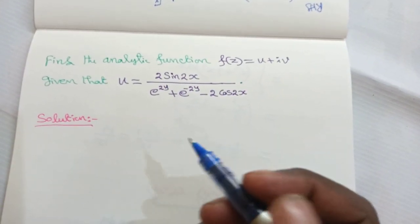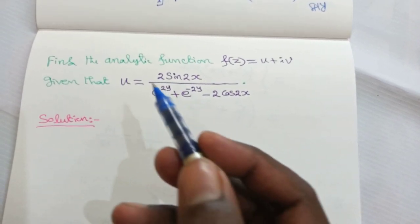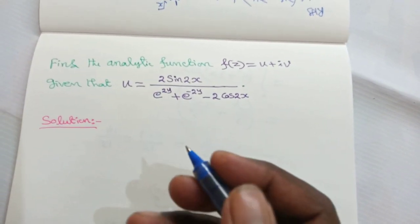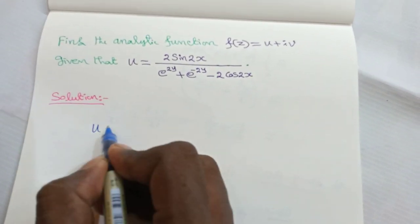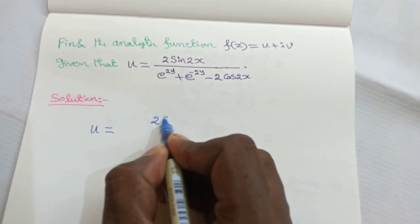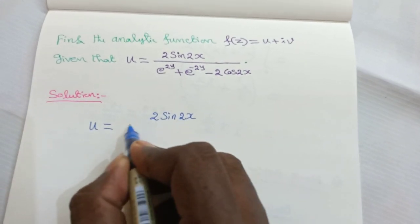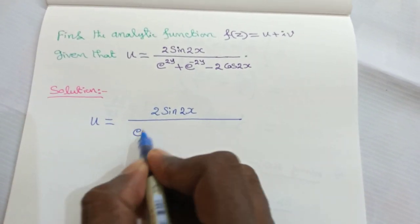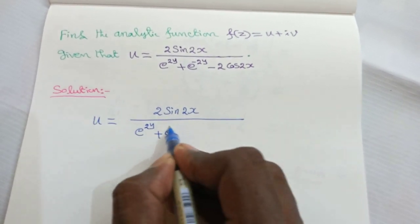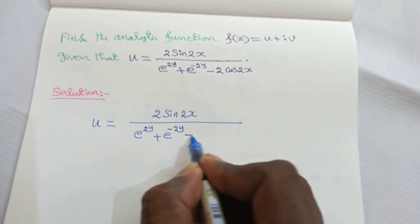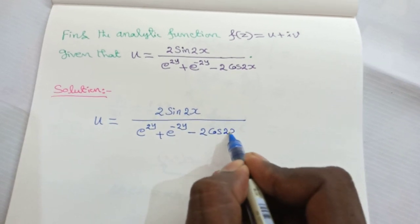We can use the Milne-Thompson method with the first formula because the real part is given. The given u is equal to 2sin(2x) divided by e^(2y) + e^(-2y) minus 2cos(2x).